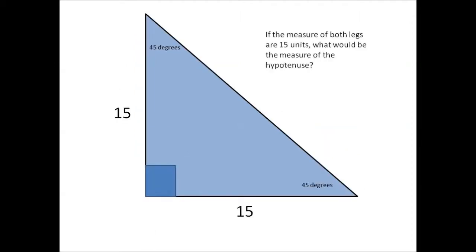If the measure of both legs are 15 units, what would be the measure of the hypotenuse? According to the 45-45-90 triangle formula, the hypotenuse is the measure of the leg multiplied by root 2. The hypotenuse would be 15 root 2.